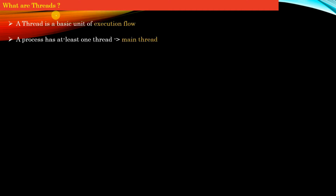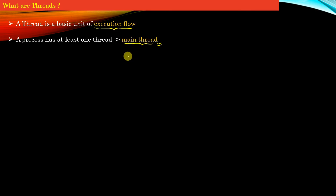A thread is the basic unit of execution flow, and a process has at least one thread, which we call the main thread. Any executable program has at least one function called main, and that main function runs as the main thread.